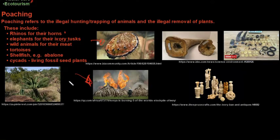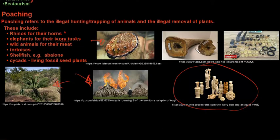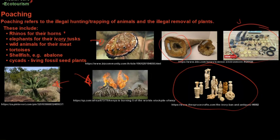Wild animals are also poached for their meat, tortoises, shellfish such as abalone stripped from coastlines, and cycads — which are living fossils — collected by exotic plant collectors. Ivory is used for ornamental value, and rhino horn is used for jewelry, as an aphrodisiac, or incorrectly believed to cure cancer. Rhino horn is actually made up of keratin, the same material as hair and fingernails. The next video will start with the sustainable use of certain medicinal plants.